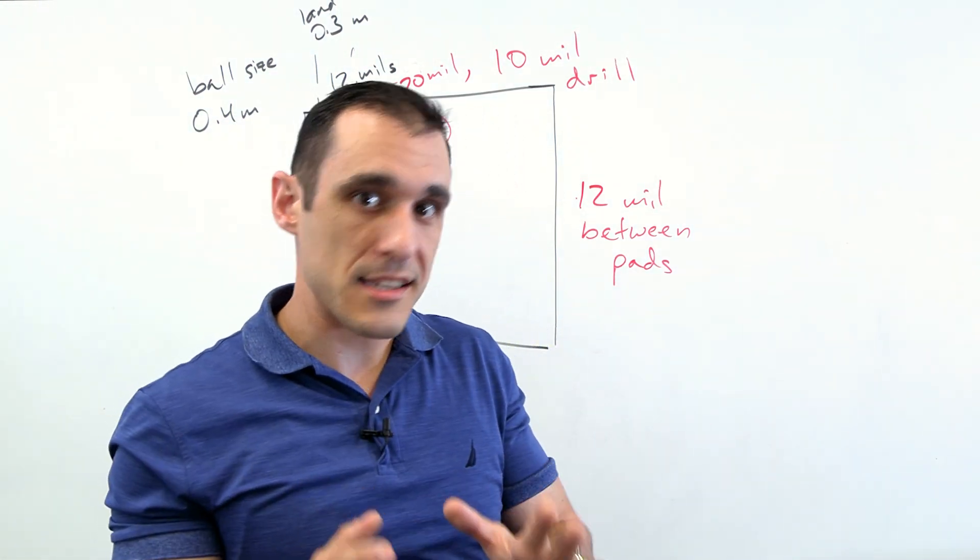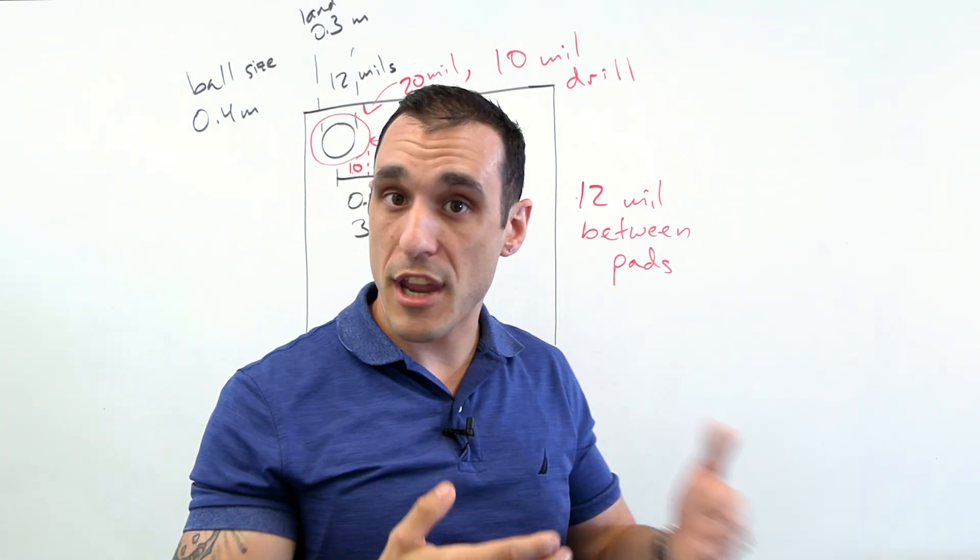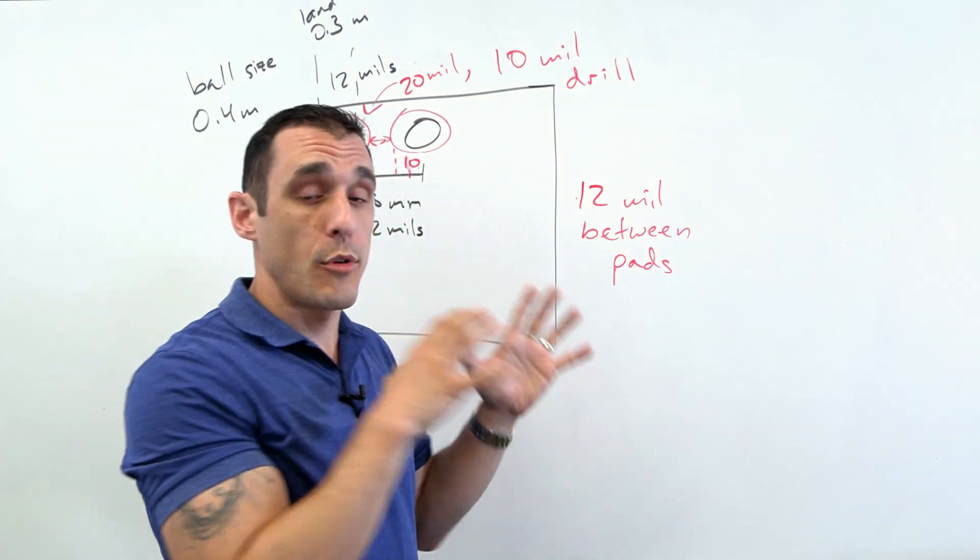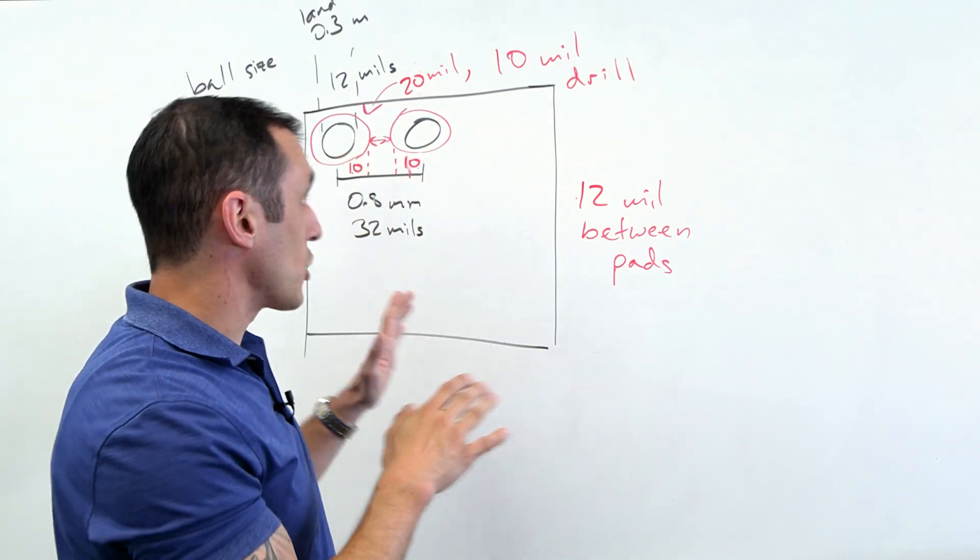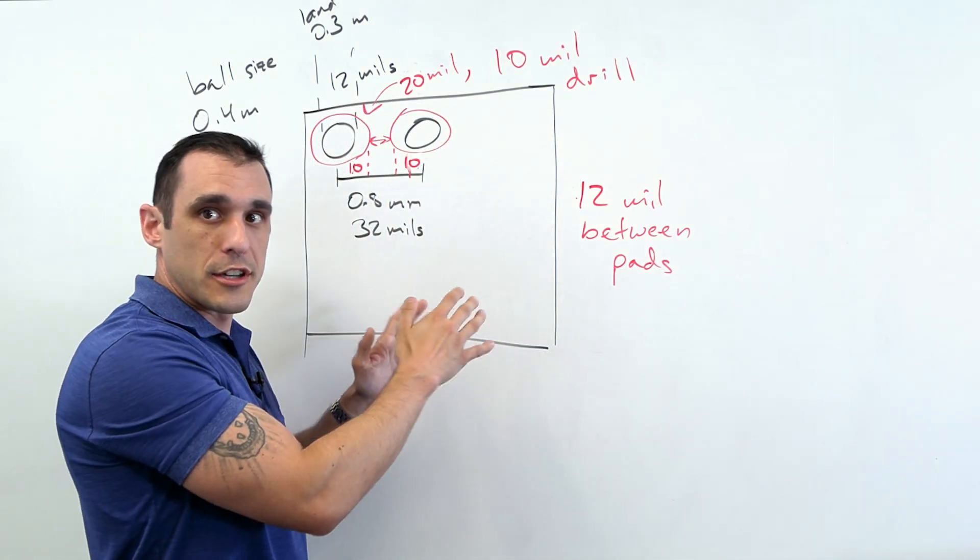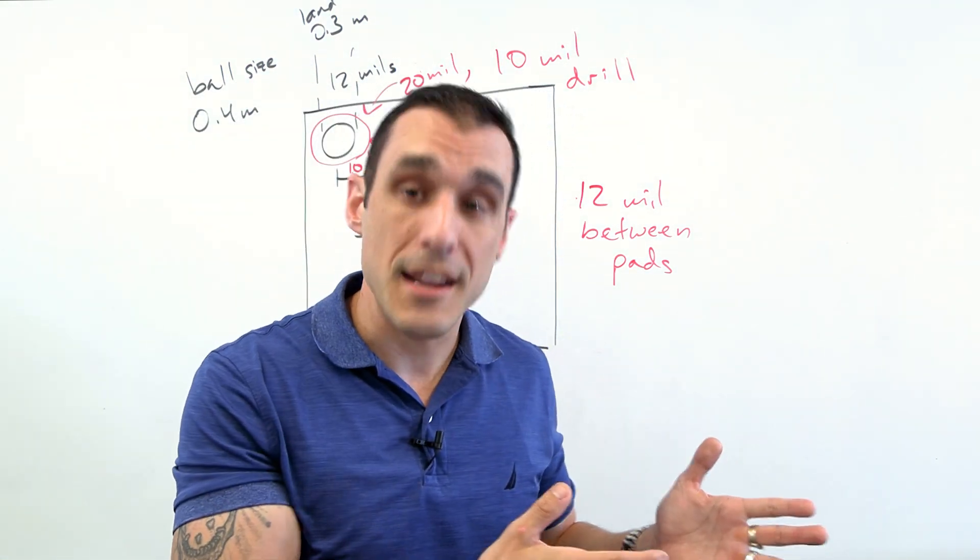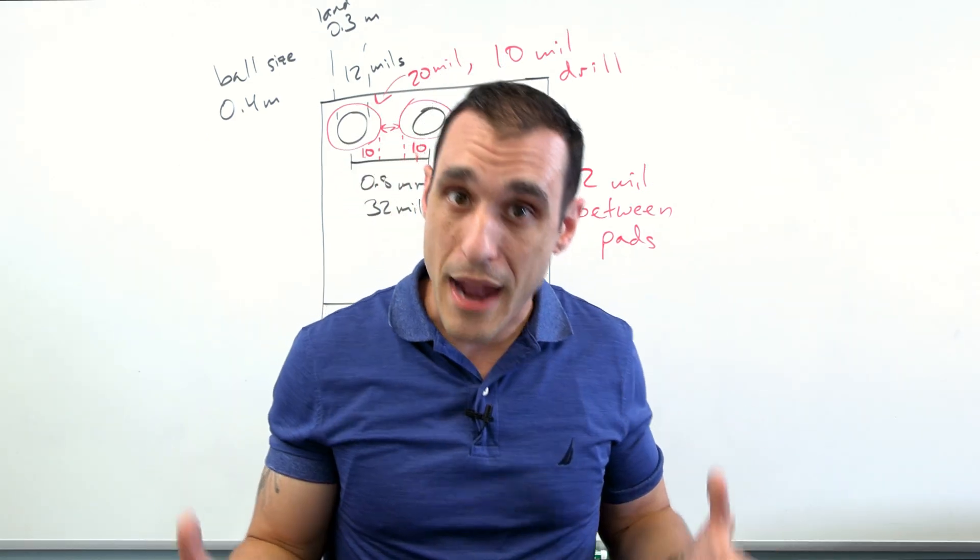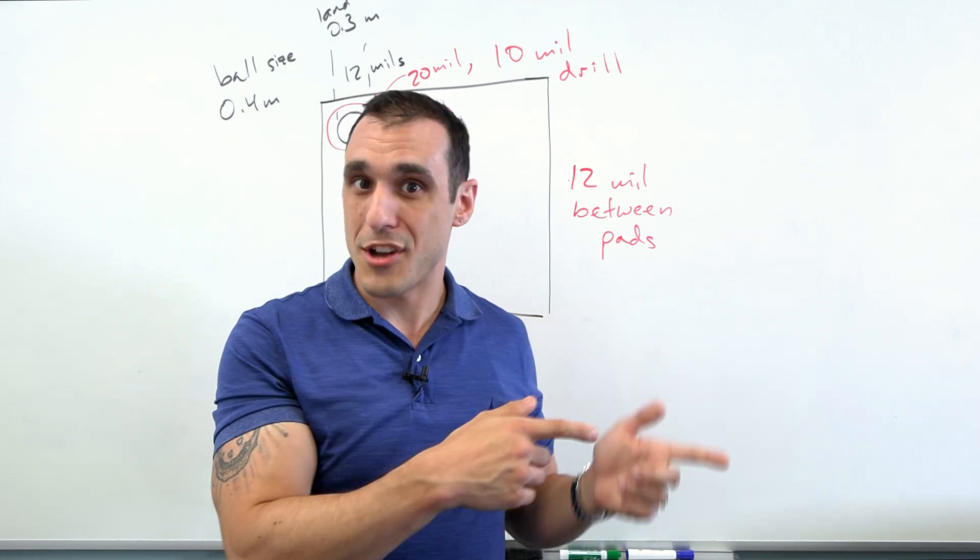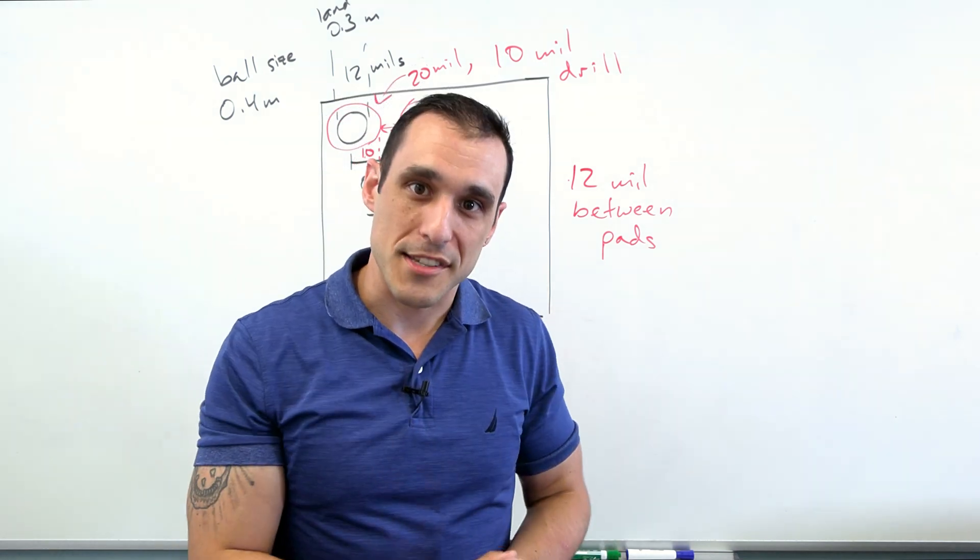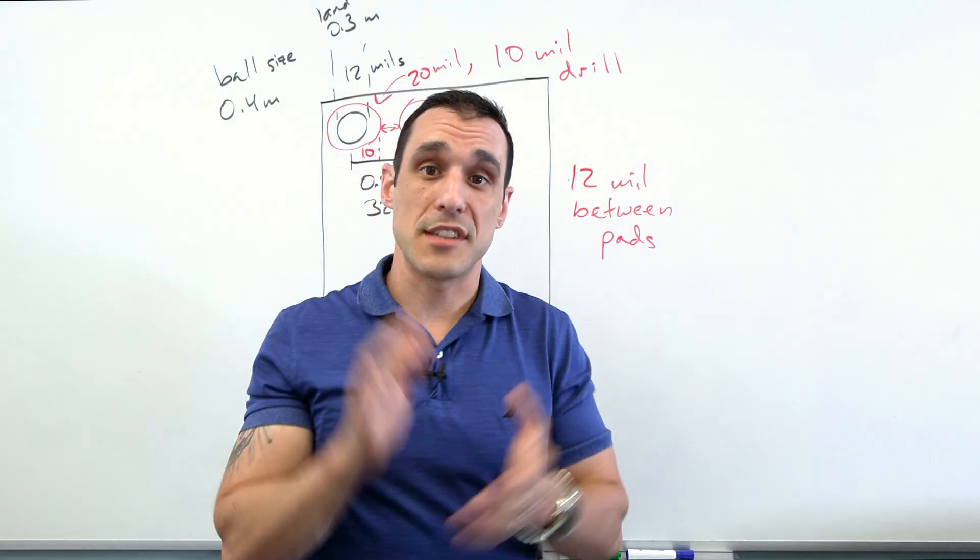Before you actually finalize this, I do recommend go talk to a fabrication house, make sure that this is something that the fabricator you want to use can actually fabricate before you finalize this. Because otherwise, if you do the design first, and then it turns out that you're going to violate their clearance capabilities, what they're going to do is they're going to come back and tell you, hey, you need to change this footprint. That can usually mean that you're going to have to change all the routing in that component. And let's say it's a 169 ball BGA like we just saw on the screen, that's a lot of traces that you have to reroute. So do your homework on the front end, figure this out first, and you'll save yourself some headache later.